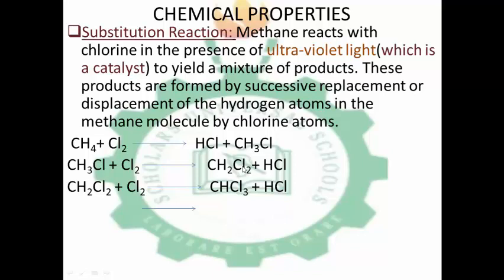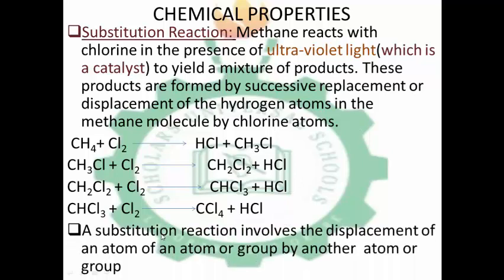On reacting chloromethane with chlorine again, we produce dichloromethane and hydrogen chloride. You may ask why it is still called methane — because chlorine is just a substitution; it replaces hydrogen but the carbon backbone remains. The number of times chlorine is substituted is indicated by di-, tri-, or tetra-. We have dichloromethane reacting with chlorine to give trichloromethane and hydrogen chloride, then trichloromethane reacting with chlorine to give tetrachloromethane and hydrogen chloride. The catalyst used throughout is ultraviolet light. A substitution reaction involves the displacement of an atom or group by another atom or group.